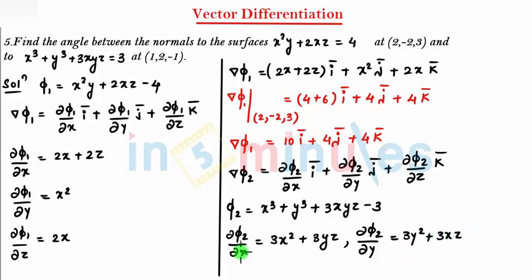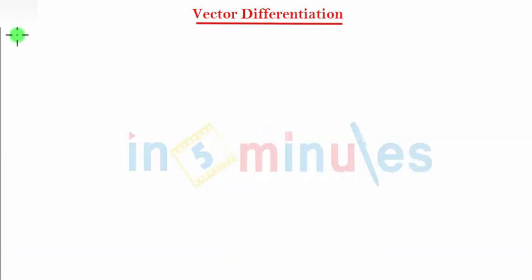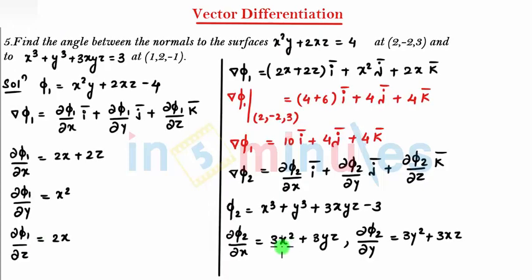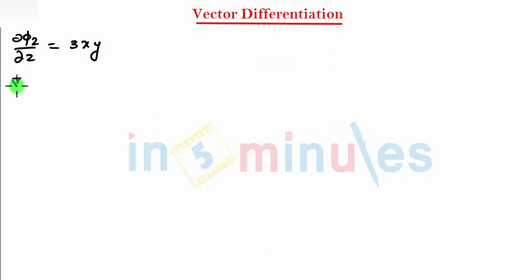And the last is ∂φ2/∂z. When you differentiate with respect to z, I get only 3xy. So therefore I can write ∇φ2 is equal to: